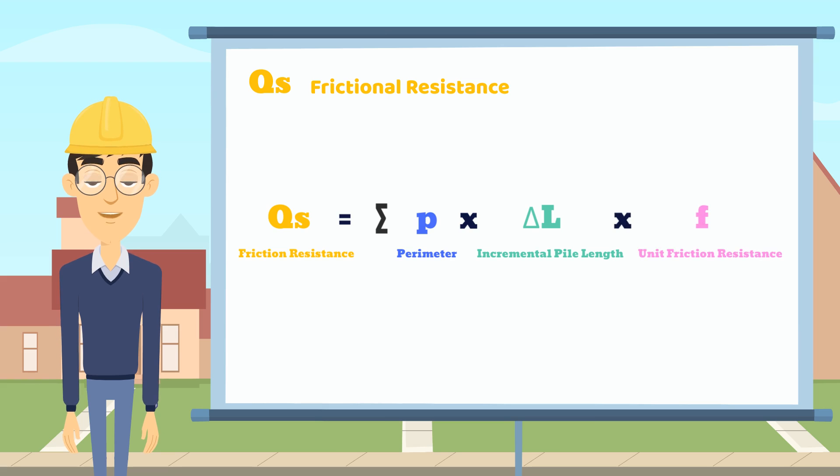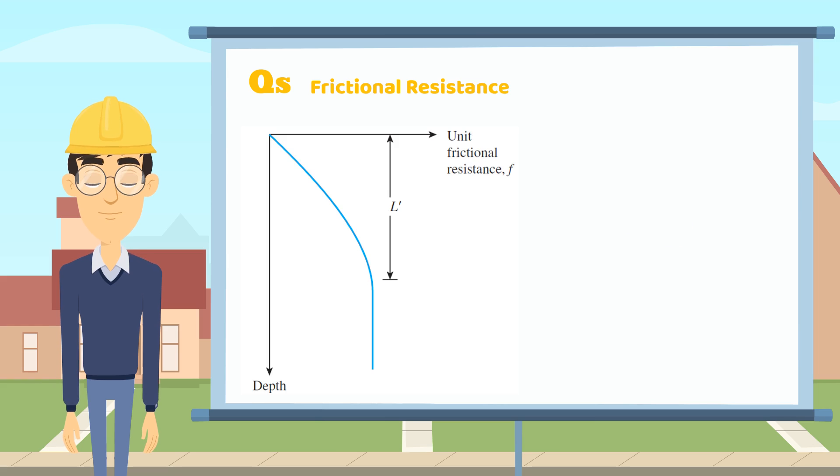Why do we need to divide the pile into different parts? It is because the frictional resistance for the pile may not be consistent at all depths.